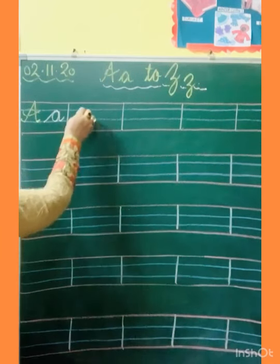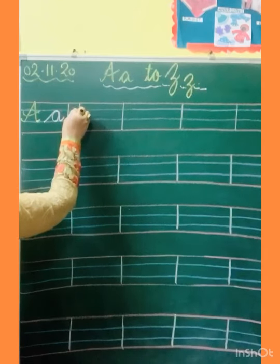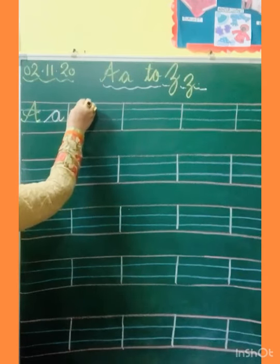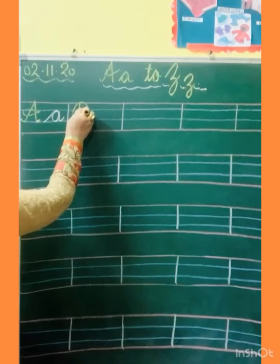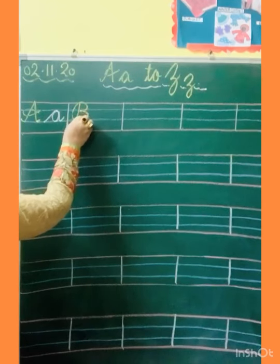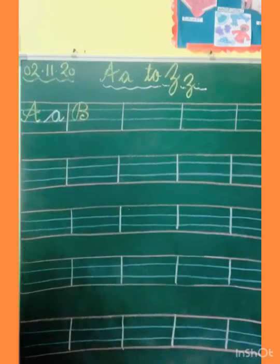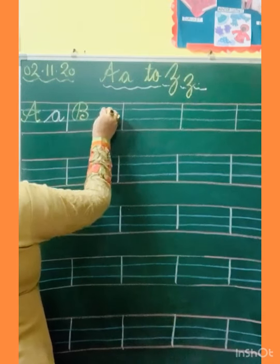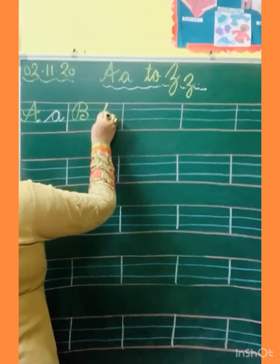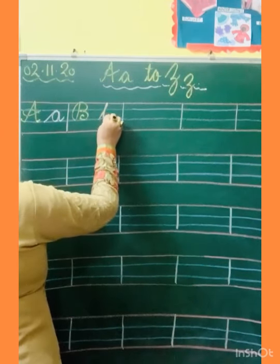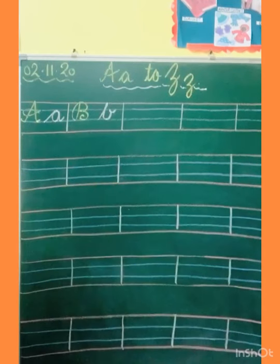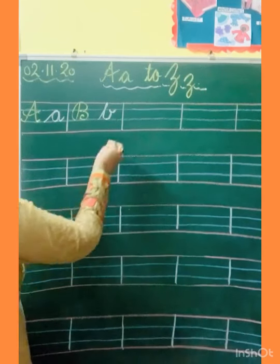Now capital B. Slanting line, go back, turn, one circle, second circle, and turn. This is B. And small B: slanting line, come to standing line, go up, and turn. This is small B.